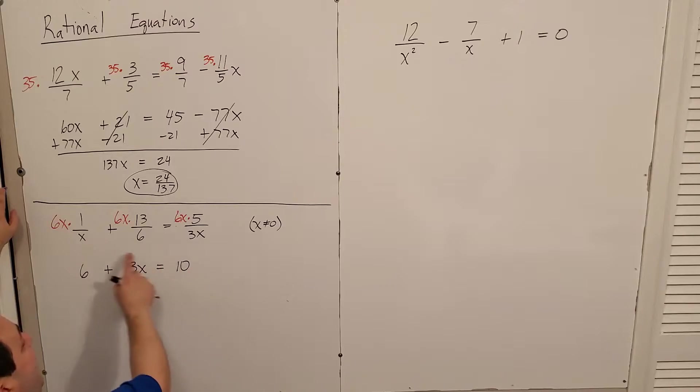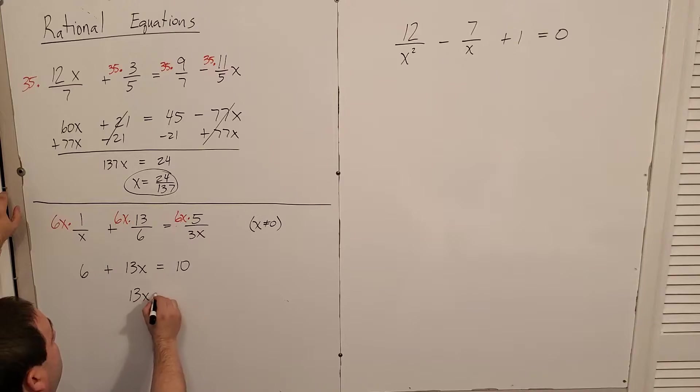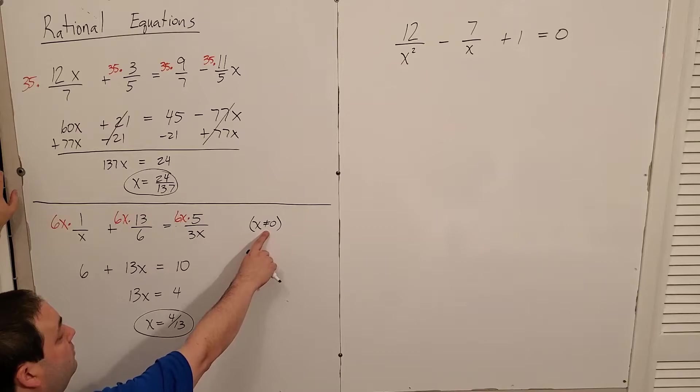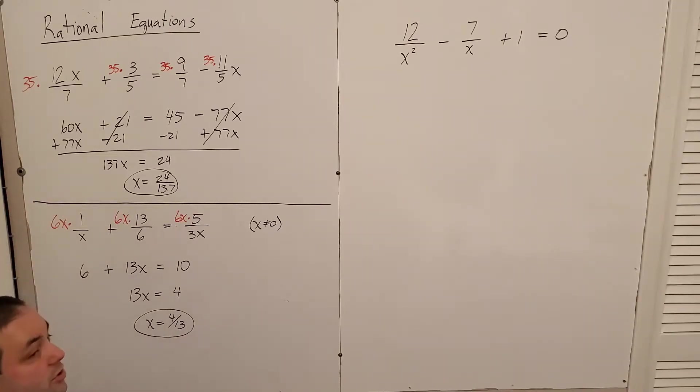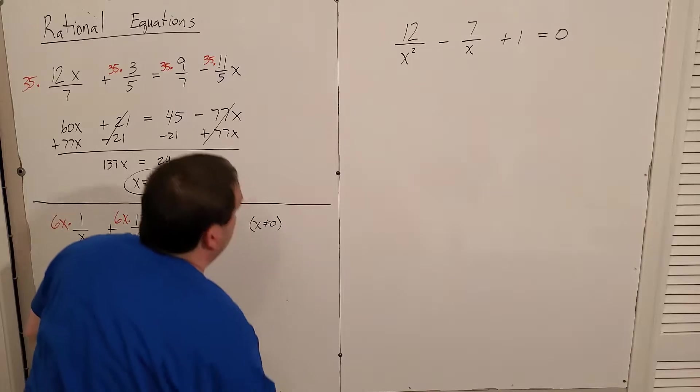So notice now I am no longer in a rational equation. It is a linear equation. I can then subtract the six from both sides. And then divide both sides by 13. Don't forget to double check that this isn't the excluded value. x can't be zero. So we're safe. Four over 13 is a perfectly good solution for this.